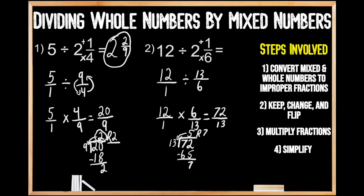Now we can write our mixed number. The five whole groups of 13 is the whole number part of our answer. The denominator hasn't changed — it's still in thirteenths. And the remainder of seven is our numerator. So when we divide 12 by two and one-sixth, we get five and seven-thirteenths. Hopefully by now you understand the steps involved when dividing whole numbers by mixed numbers.